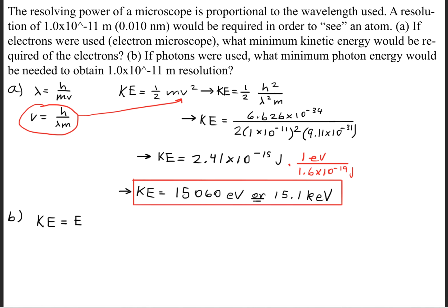So part B is asking for the minimum photon energy, and we know that the energy of a photon is simply Planck's constant times the speed of light divided by the wavelength.